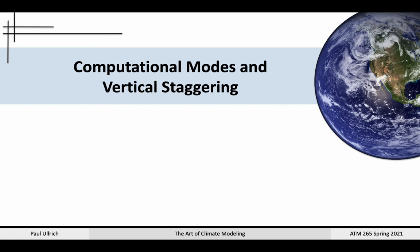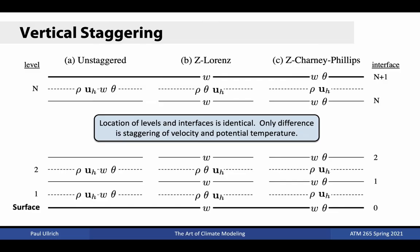The next topic has to do with computational modes in non-hydrostatic models. We've already discussed computational modes in the horizontal, but they can be far more problematic in the vertical — one cannot easily rely on numerical viscosity to eliminate spurious behavior, since that could affect atmospheric stratification. In order to understand how computational modes emerge, we will consider three possible staggerings of data in the vertical. In a vertically unstaggered model, all variables — including density, horizontal velocity, vertical velocity, and potential temperature — are found on model levels.